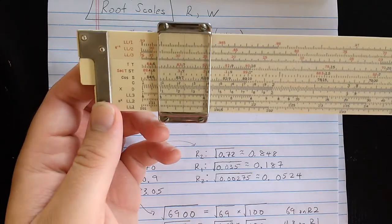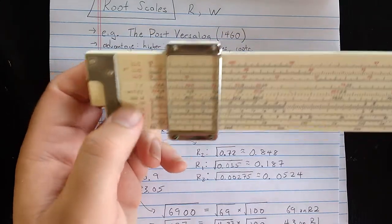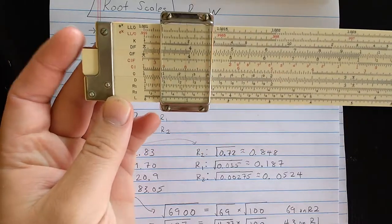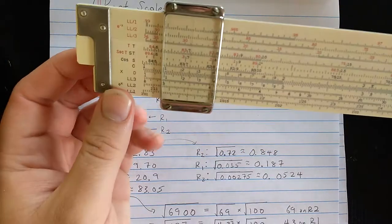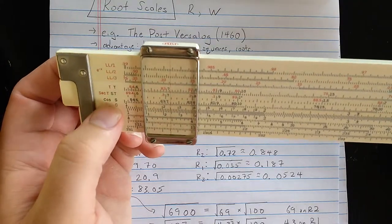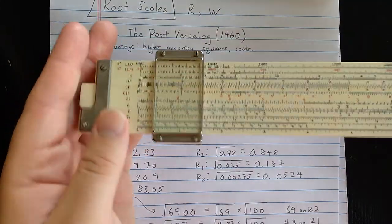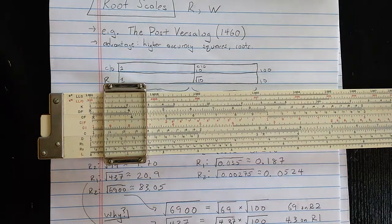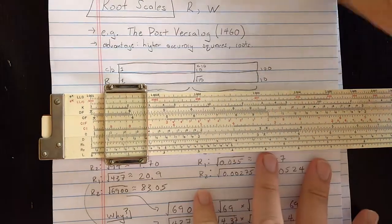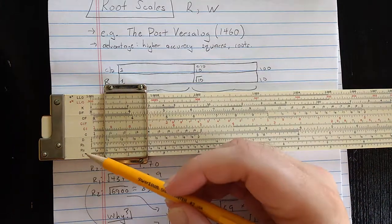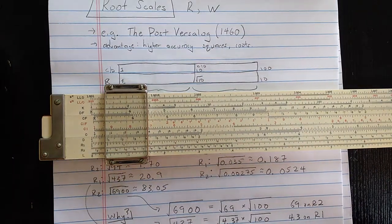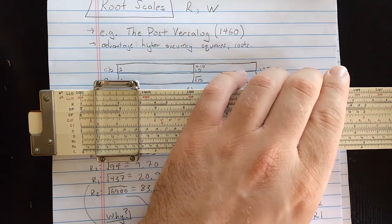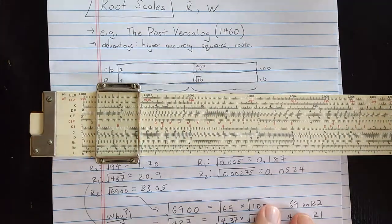It's fitting is the VersaLog that it has two sets of four log-log scales. Also has the folded scales and trig scales, including ST. What it has, which is a little bit unusual and we haven't looked at yet, are these root scales, the R1 and the R2.